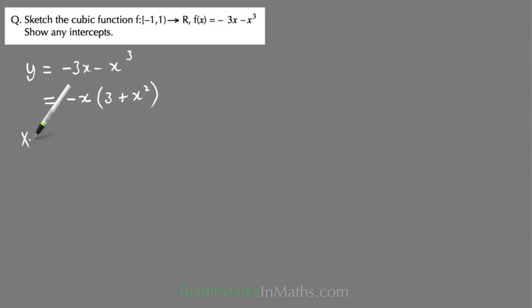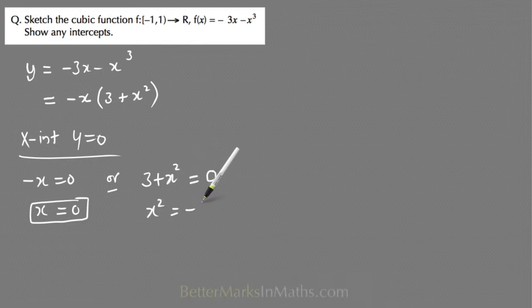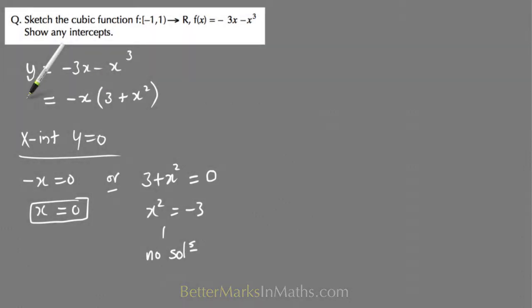From there to find the x intercept, again letting y equals 0, you end up with either x is 0, it's really minus x is 0, and from there x equals 0. That's the first intercept at 0, 0. And the other solution is 3 plus x squared equals 0. From there x squared equals minus 3. No number squared will equal a negative number, so there's no solutions to this part.